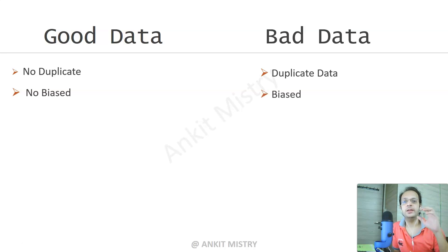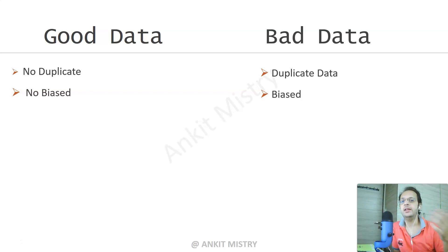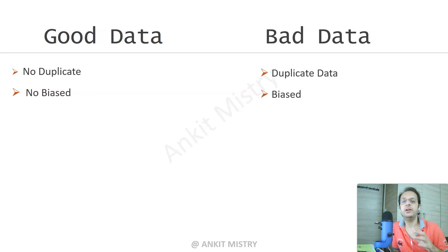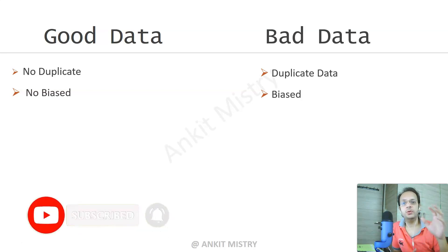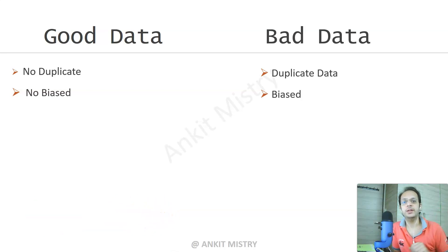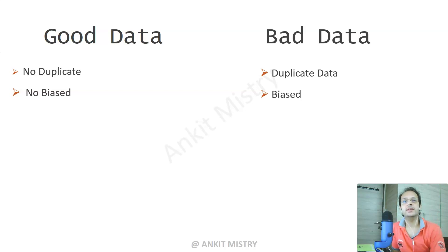Good data is not biased, whereas bad data is biased because it is highly inclined towards gathering more data for male candidates and lesser data for female candidates. Similarly, if you are trying to find the average height of a person in the United States but you gather more data from specific states like Texas, Florida, or California compared to other states, that is also a form of bias.